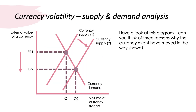Let's do a quick supply and demand exercise on currency. The diagram shows the external value of a currency on the y-axis and the volume of currency traded on the x-axis. The market has changed — can you think of three reasons why the currency might have moved in the way shown? Press pause and jot down your answers before we go through them together.